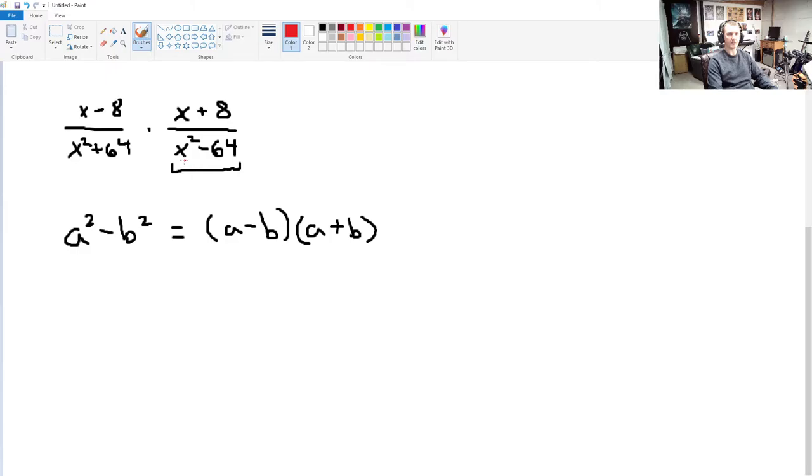We've got an x. So, this a, we'll say that's our x. And we've got 64. Now, the square root of 64 is 8. So, this b is actually 8. So, we're going to factor this denominator here on the right into x minus 8 times x plus 8.